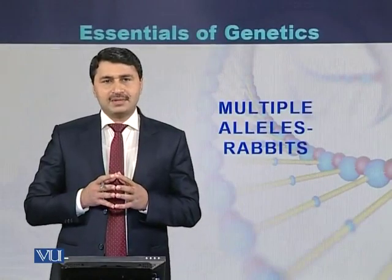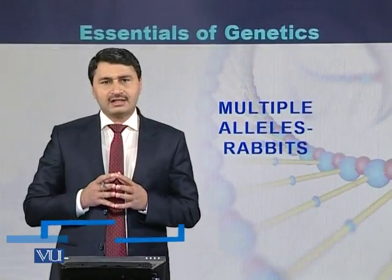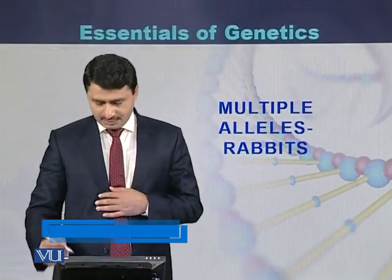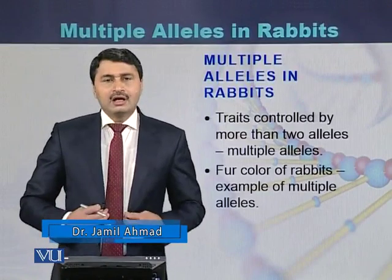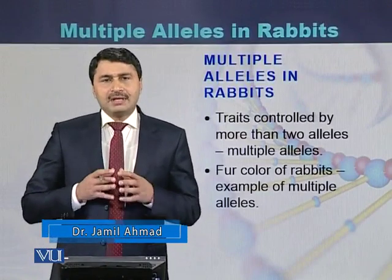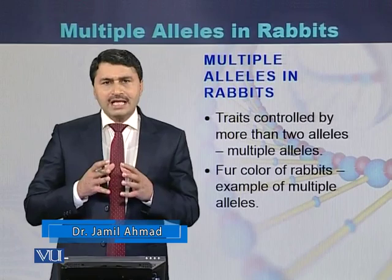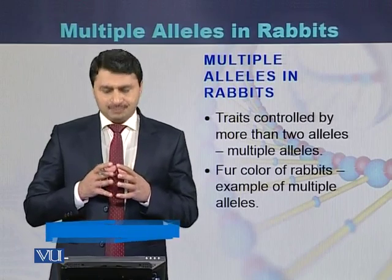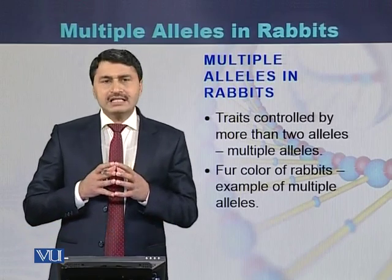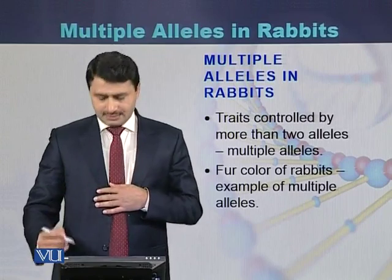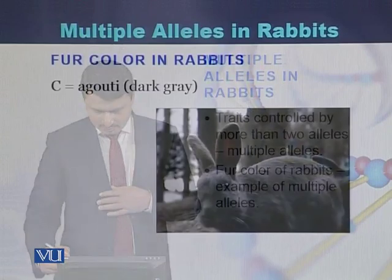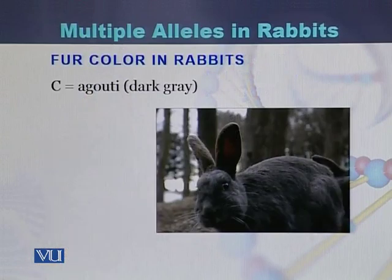Multiple alleles are those traits which are controlled by more than two alleles. An example is the fur color in rabbits. Fur color in rabbits can exist in many forms.